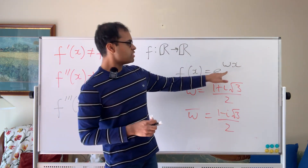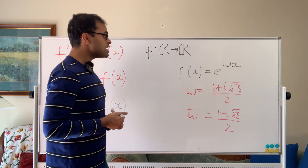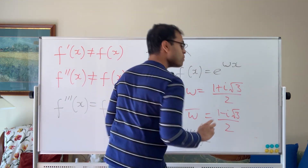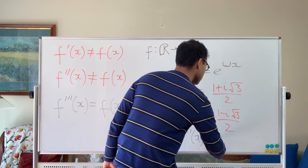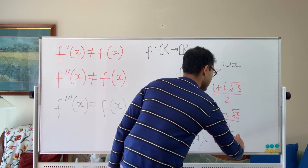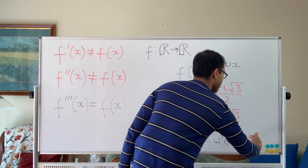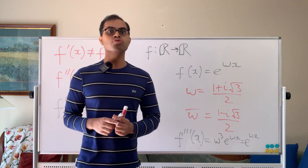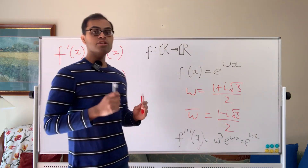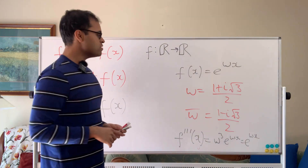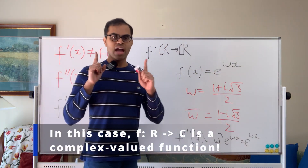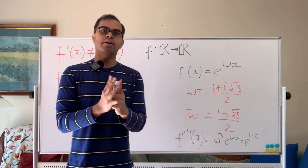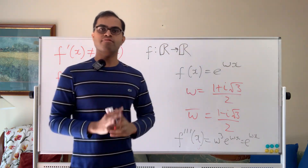We know that f(x) = e^(ωx), and if we take its third derivative, f'''(x) = ω³·e^(ωx) = e^(ωx), so it equals its third derivative but not its first two. To make it into a real-valued function, that's a beautiful trick: we take e^(ωx) and e^(ω̄x) and combine them to create a real-valued function.